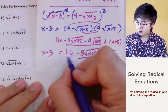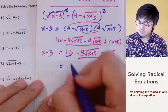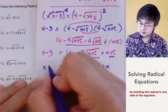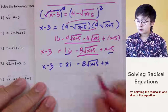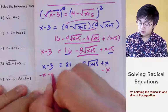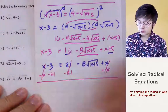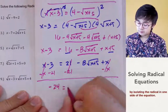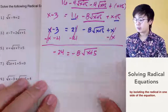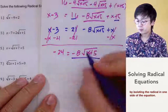Now we isolate the radical expression. Combining 16 and 5 gives 21, so we have 21 minus 8 times square root of x plus 5 plus x equal to x minus 3. Subtracting x from both sides and subtracting 21 from both sides isolates the radical term, leaving us with negative 8 times square root of x plus 5 equal to negative 24.